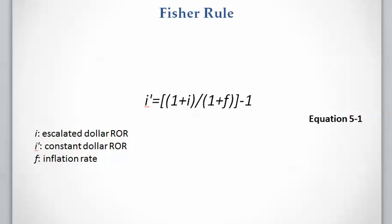The Fischer rule is the equation that helps us compare and convert these rates. In the equation, I is the escalated dollar rate of return, I prime is the constant dollar rate of return, and F is the inflation rate. You can calculate any of these from the other two, and this equation is applicable for any other rate — not just rate of return — that you need to convert between escalated dollar and constant dollar.